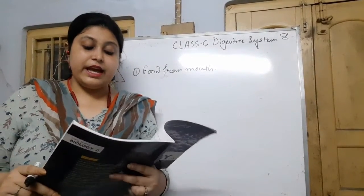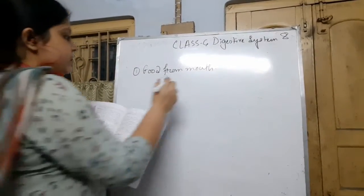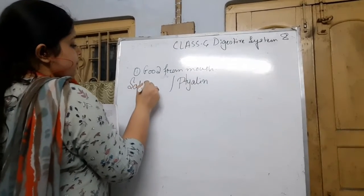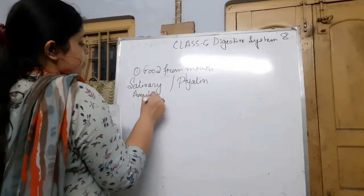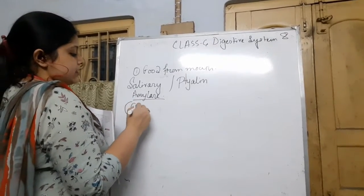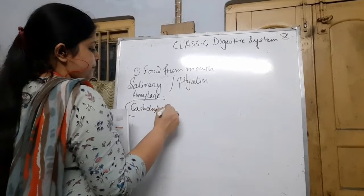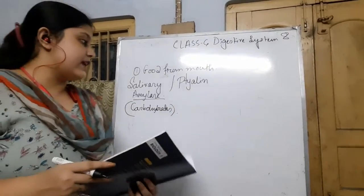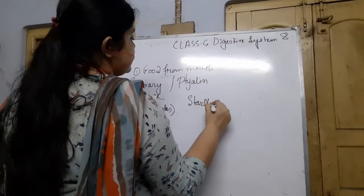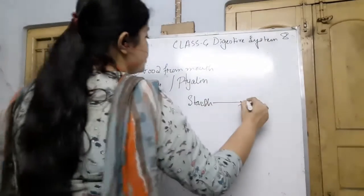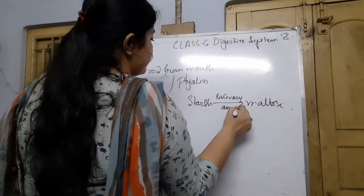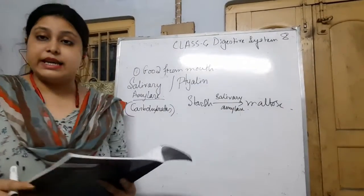The salivary gland contains salivary amylase, also called ptyalin. Amylase is an enzyme that can break down carbohydrates. Only carbohydrate digestion starts in the mouth by salivary amylase. The carbohydrate foods or starches are broken down into smaller molecules with the help of salivary amylase. Only the digestion of carbohydrates takes place in the mouth.